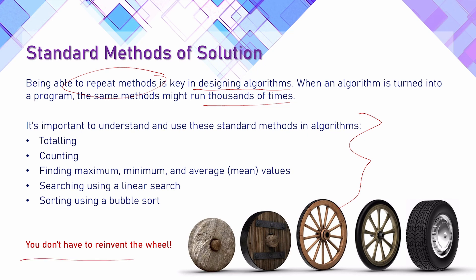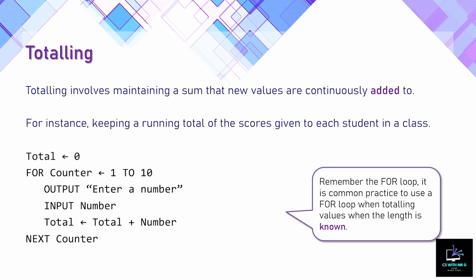You don't have to reinvent the wheel, because some of these methods have been around for many years. They are proven methods and we just need to learn how and when to use them. The first one is what we call totalling — being able to keep a total value, maintaining a sum where new values are continuously added. Our example is keeping a running total of scores given to each student in a class.